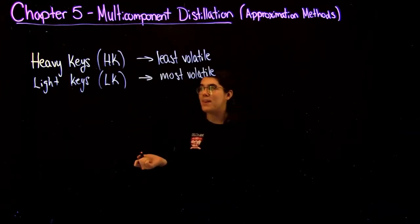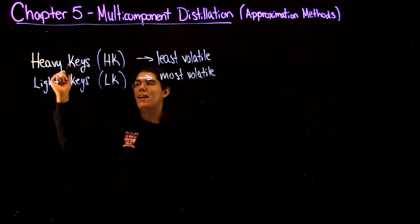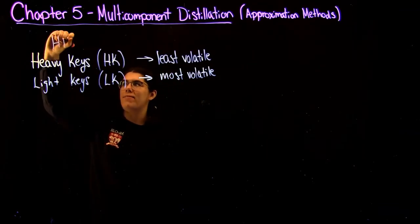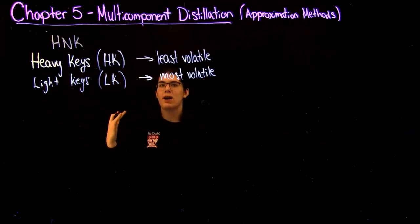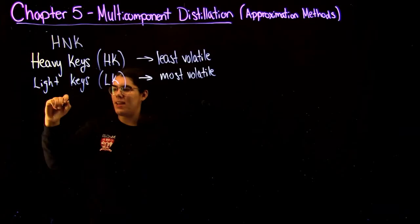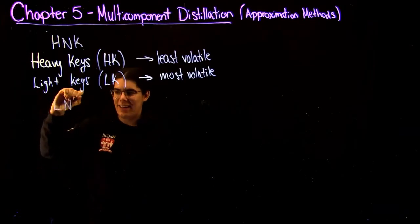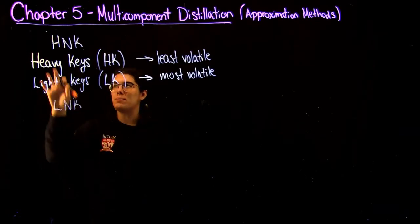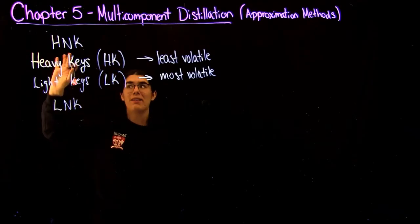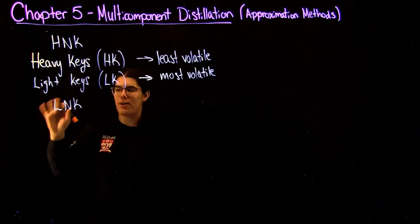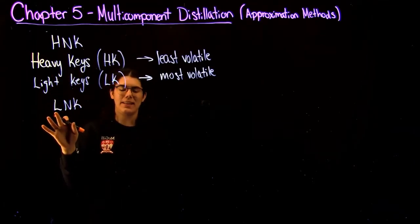When you have something that is less volatile than your heavy key, it's called a heavy non-key, or HNK. And when you have something that's more volatile than your light key, you call it a light non-key, LNK. So it's these heavy non-keys and light non-keys that we can assume 100% of the heavy non-key leaves the bottom, and 100% of the light key leaves the top.